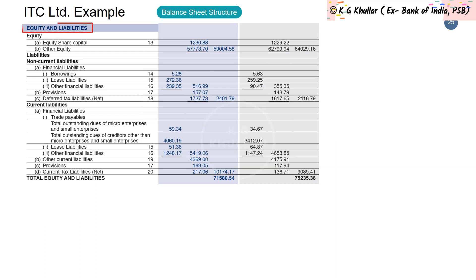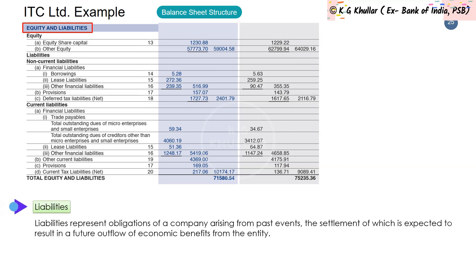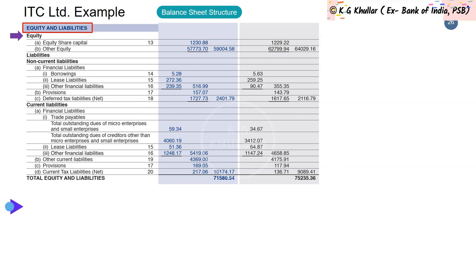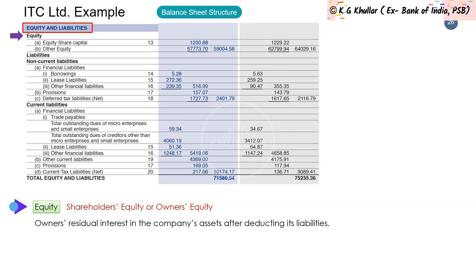The liability section is formed of liabilities plus equity. Liabilities are what the company owes — formally, obligations of a company arising from past events, the settlement of which is expected in a future outflow of economic benefits. Equity represents the owner's residual interest in the company's assets after deducting its liabilities, commonly referred to as shareholder's equity or owner's equity.